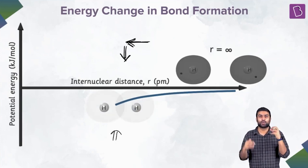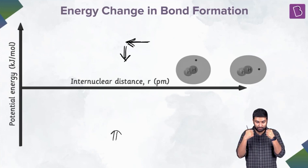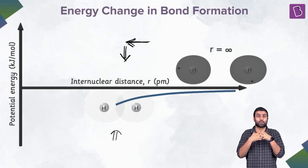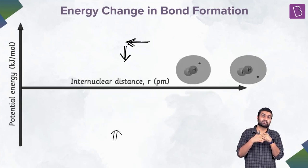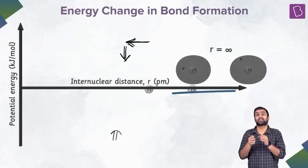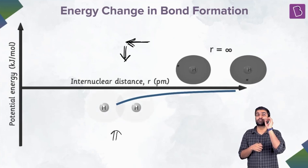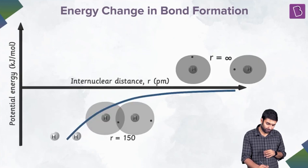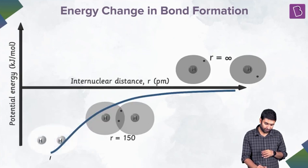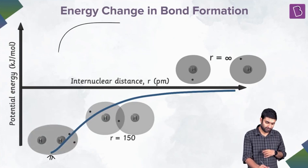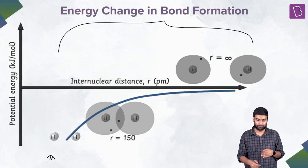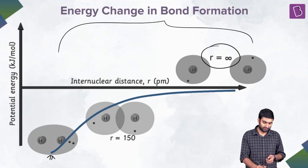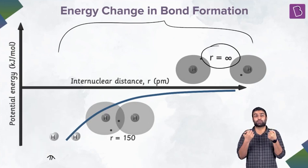There comes a point where the attractive force balances the repulsive force, so there is no net attractive or net repulsive force — the net force is zero. Before this point, in this region, there was a net attractive force. This is the point where there is no net attractive or repulsive force.